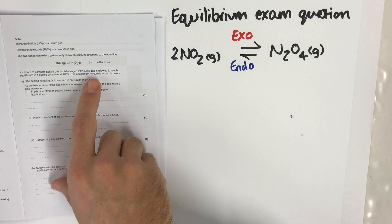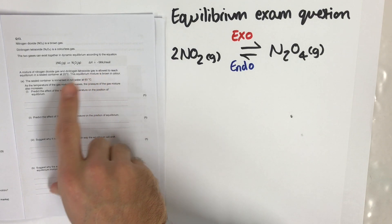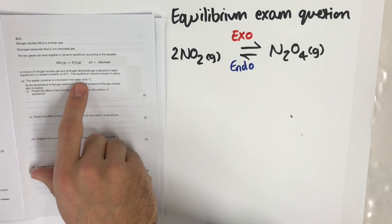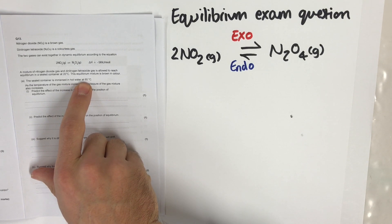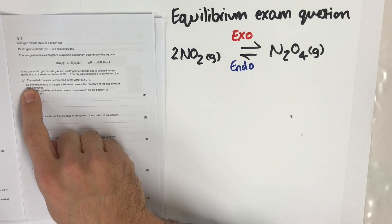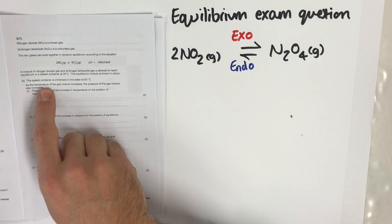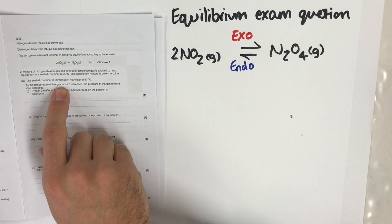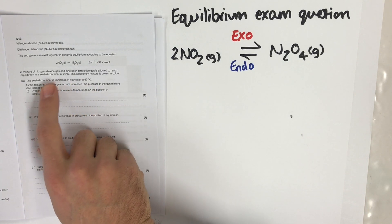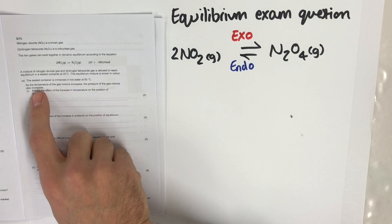This equilibrium mixture is brown in colour. The sealed container is then immersed in hot water at 60 degrees Celsius. As the temperature of the gas mixture increases, the pressure of the gas mixture also increases, so they're not going to be independent of one another in this question.